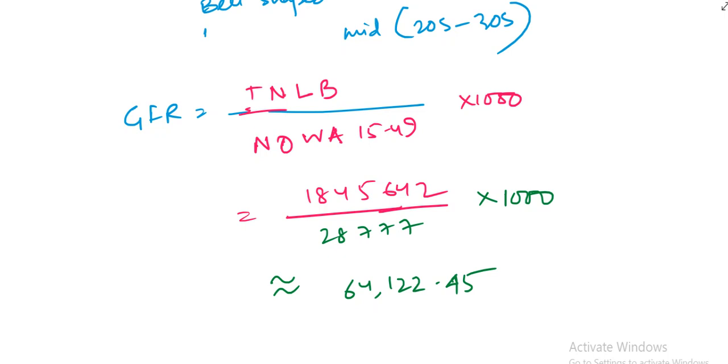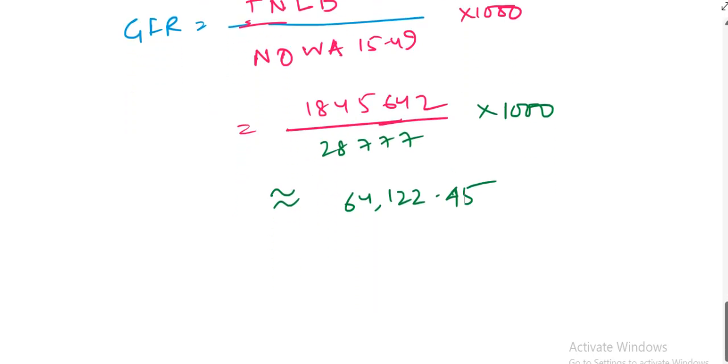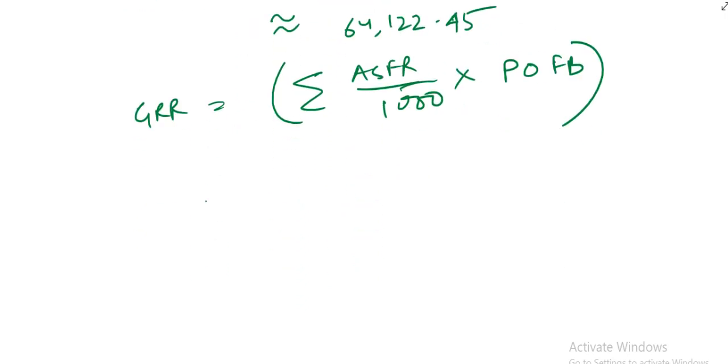And what is the GRR? The GRR means gross reproduction rate. The formula is summation of ASFR divided by 1,000 into proportion of female births. Given the proportion of female births is 46.5%, that can be represented as 0.465.